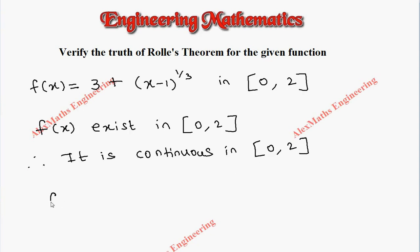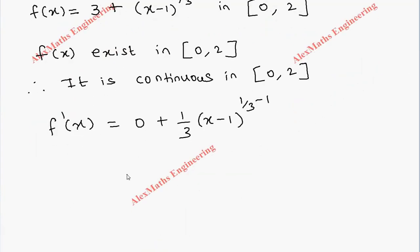Then, let us find its derivative. The differentiation of the constant is 0 and the next term differentiation is 1/3 (x-1)^(1/3 - 1). So, this will give us 1/3 (x-1)^(-2/3).